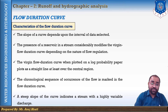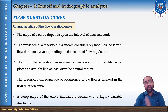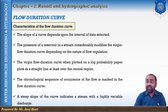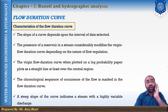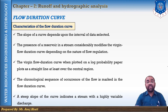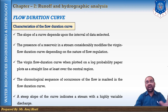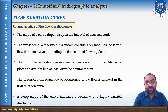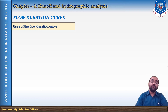A steep slope of the flow duration curve indicates a stream with highly variable discharge. On the other hand, a flat slope indicates a slow response of the catchment to rainfall and also indicates very small variability in that particular stream. The flow duration curve plotted on log paper is useful in comparing the flow characteristics of different streams.